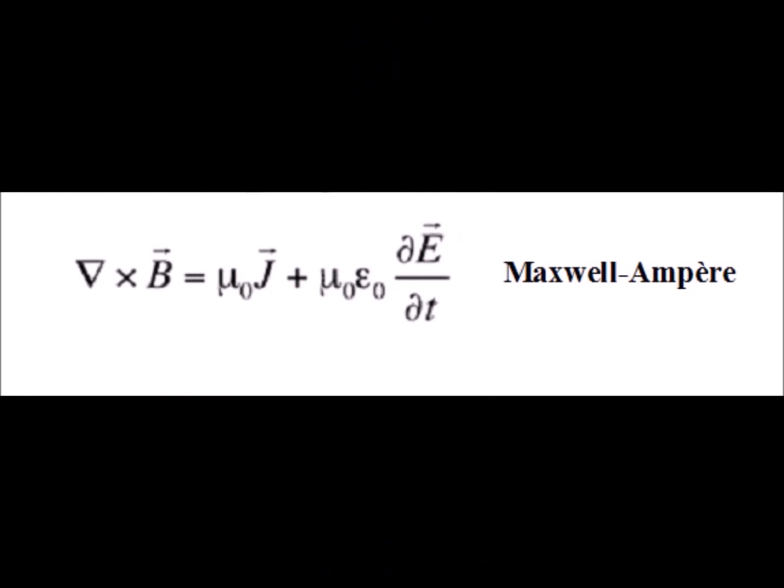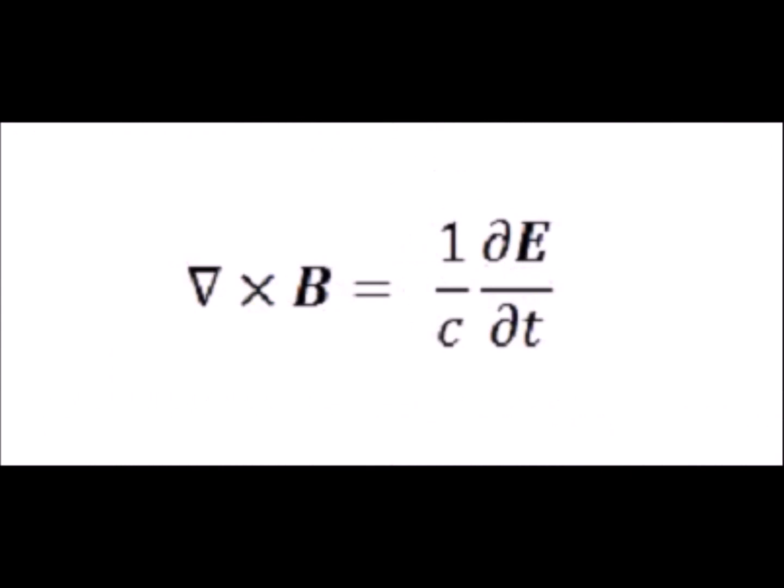This equation was generalized by Maxwell to all space, even without current. You cancel the current J and you obtain the Maxwell-Hertz equation of electromagnetic waves. It's a scientifically inconceivable sleight of hand.